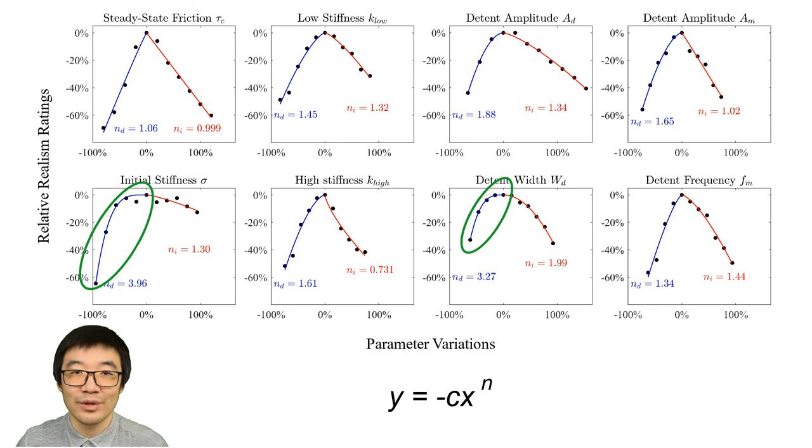The third cluster was fits where the decrease in realism had a higher order exponent in the power model. The higher order exponent indicated that a large range of parameter values near the nominal are perceived as similarly realistic, and thus designers may not need to focus on fine-tuning these parameters.